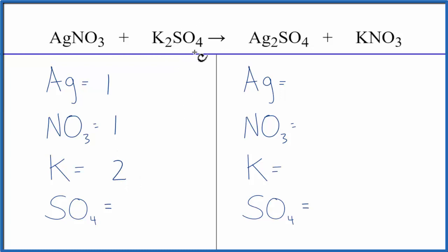Two potassiums, and then SO4, that's called the sulfate, it's a polyatomic ion. It appears here, and here, so I'm just going to count the sulfate as one item.